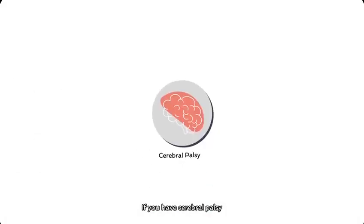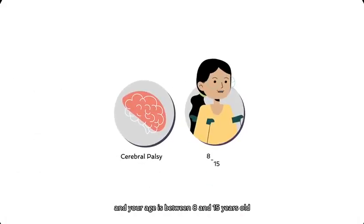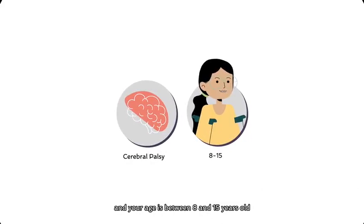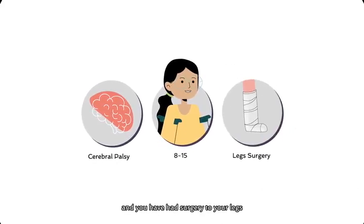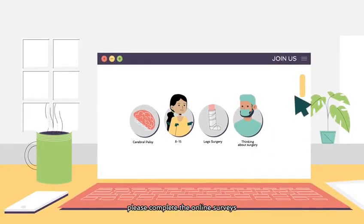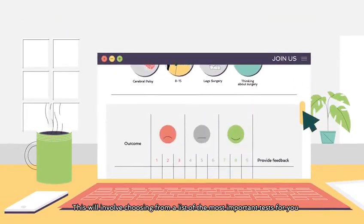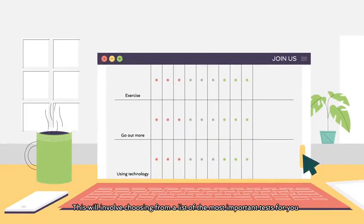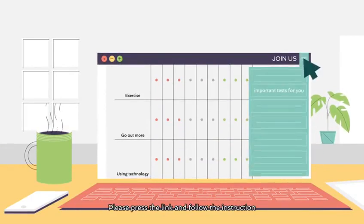If you have cerebral palsy and your age is between 8 and 15 years old and you have had surgery to your legs or are thinking about surgery, please complete the online surveys. This will involve choosing from a list of the most important tests for you. Please press the link and follow the instructions.